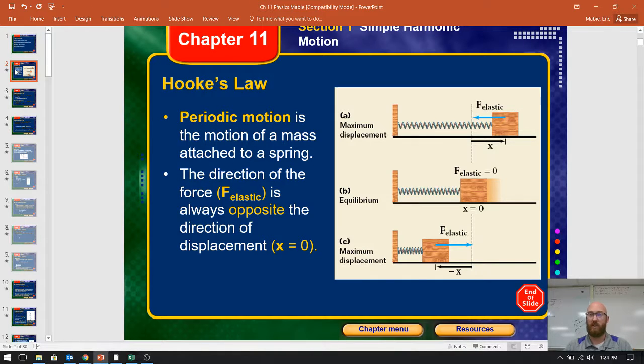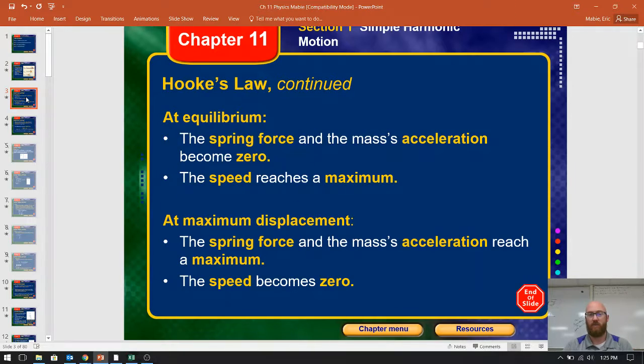point X equals zero to equilibrium, maximum displacement the other way. Now this isn't a perfect system. We'll talk about that later. We lose some energy as it goes through each cycle. So what we've already talked about, hopefully it makes sense. Here we go.